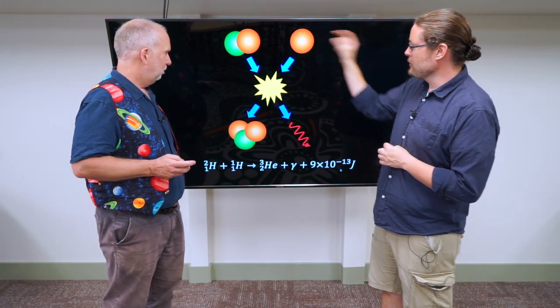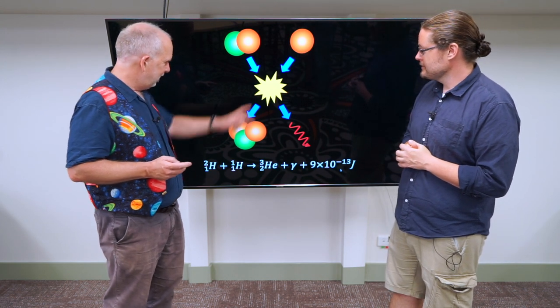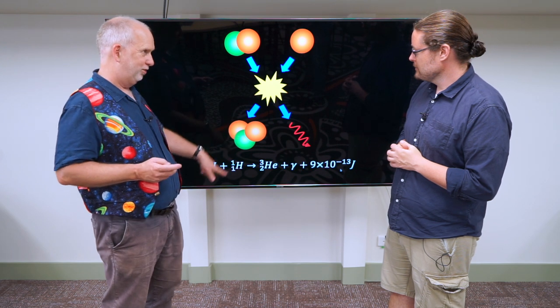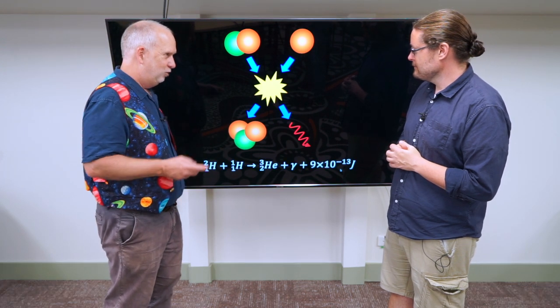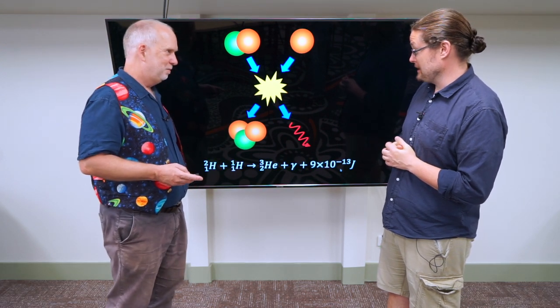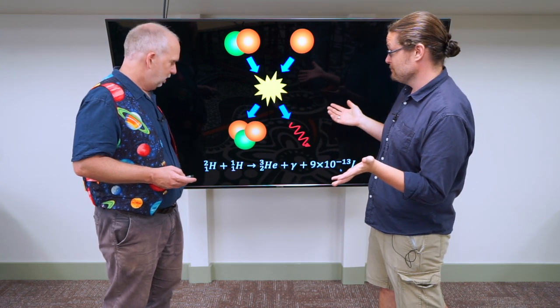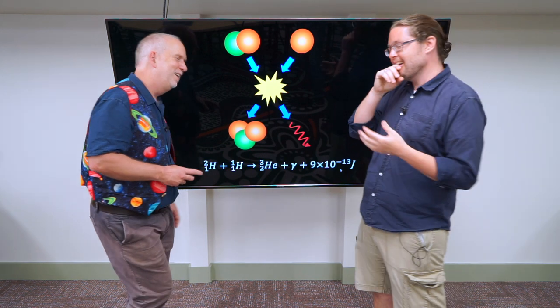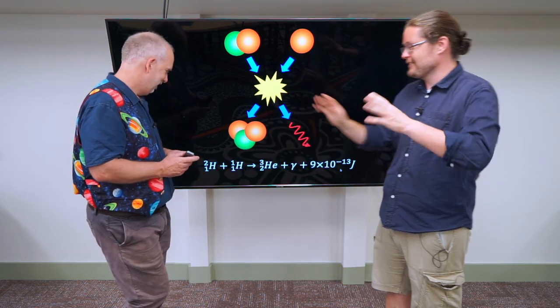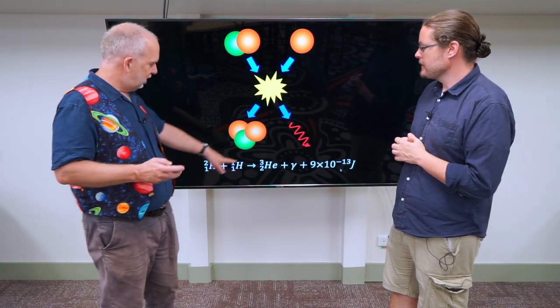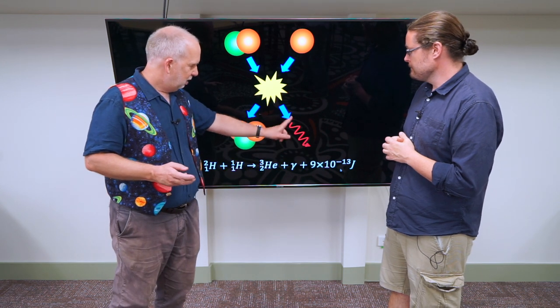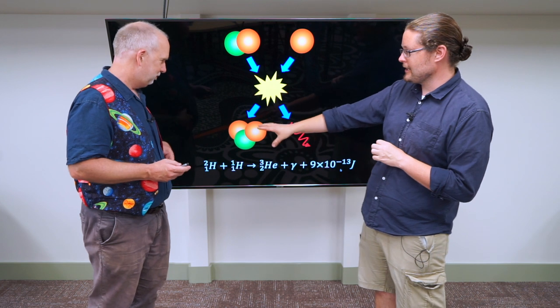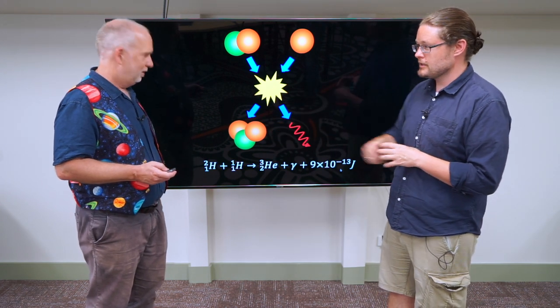So we've now got deuterium. And we're now going to throw another one into the mix. Another proton combines, and now you get helium-3 - it's got two protons and one neutron. So deuterium plus hydrogen gives you helium-3, plus a gamma ray and some more energy. That's what we want. But we're still not at normal helium yet.